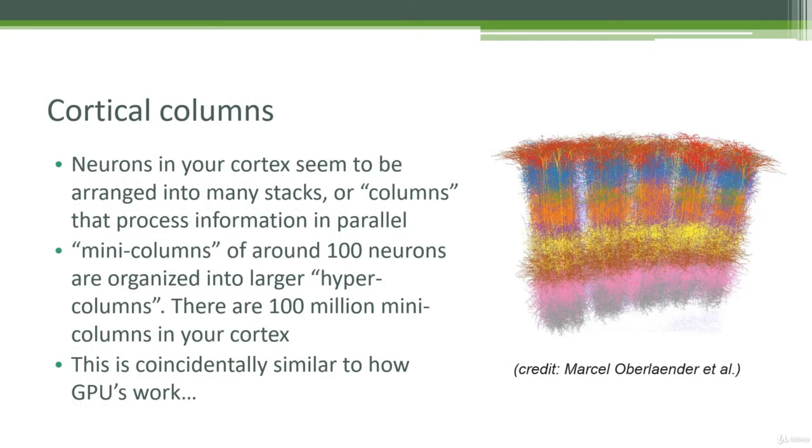Furthermore, if we look deeper into the biology of your brain, you can see that within your cortex, neurons seem to be arranged into stacks or cortical columns that process information in parallel. For example, in your visual cortex, different areas of what you see might be getting processed in parallel by different cortical columns of neurons.